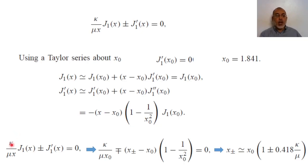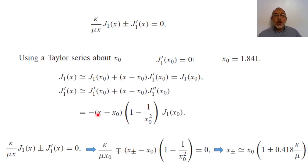Substituting the Taylor series approximations into the resonant condition — (kappa/mu) * x * J_1(x) ± J'_1(x) = 0 — and expanding around x_naught, we get: (kappa/mu) * x_naught * J_1(x_naught) ∓ (x_{+/−} − x_naught) * (1 − 1/x_naught^2) * J_1(x_naught) = 0. The factor J_1(x_naught) cancels, giving a simplified characteristic equation.